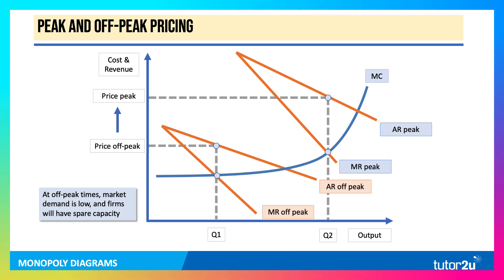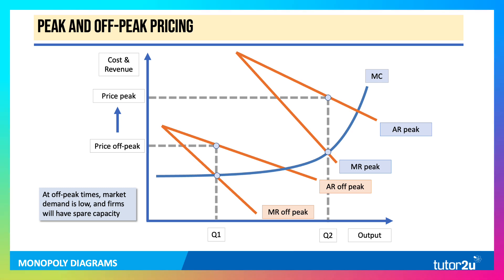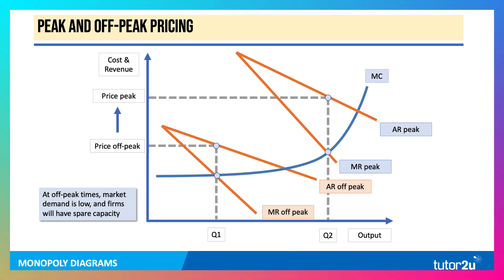Another aspect of pricing is off-peak and peak pricing. At off-peak times, demand is low and price-elastic, so you tend to charge a low price. Whereas at peak times, when the elasticity of supply is falling, marginal cost is rising, and demand is higher, you charge a higher peak price. This is a good diagram to show things like pricing of theme parks and dynamic pricing used by hotel chains.